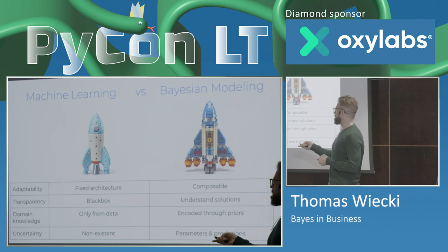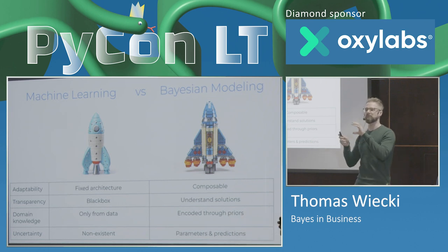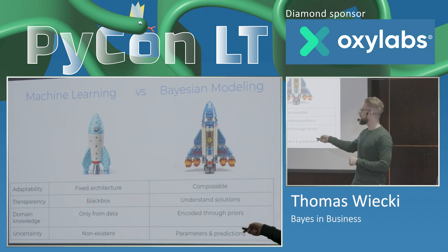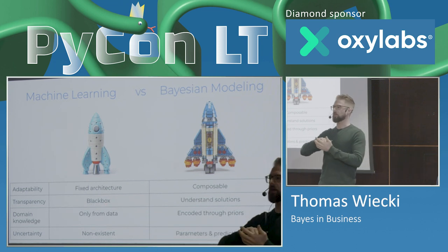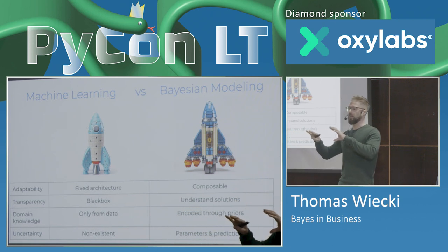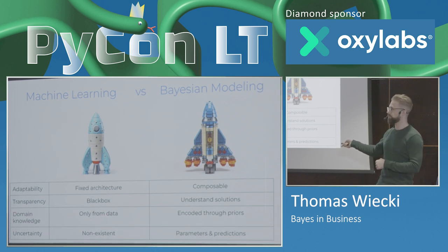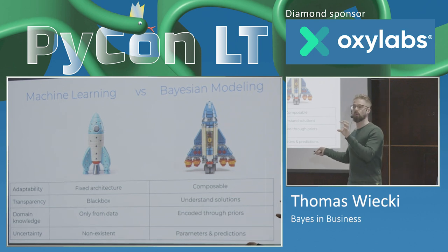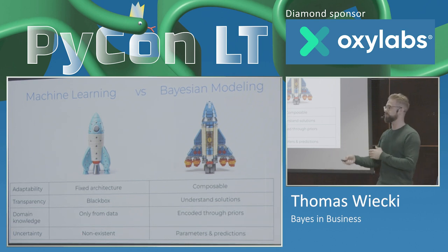To compare the two: with machine learning you have a fixed architecture — there are many different types of models but you can't really change them to adapt to your specific data needs, whereas here we have this idea of composability. Furthermore, talking about transparency, those ML models are inherently black box — they're learning crazy hyperlinear things that don't really tell you anything about how predictions are generated. Also, we have to learn everything from the data, whereas with Bayesian models we can inform the model about what we think our solution space looks like before we see any data — which is powerful when working with domain experts. And lastly, here with ML you get one prediction, whereas here you get a whole distribution.